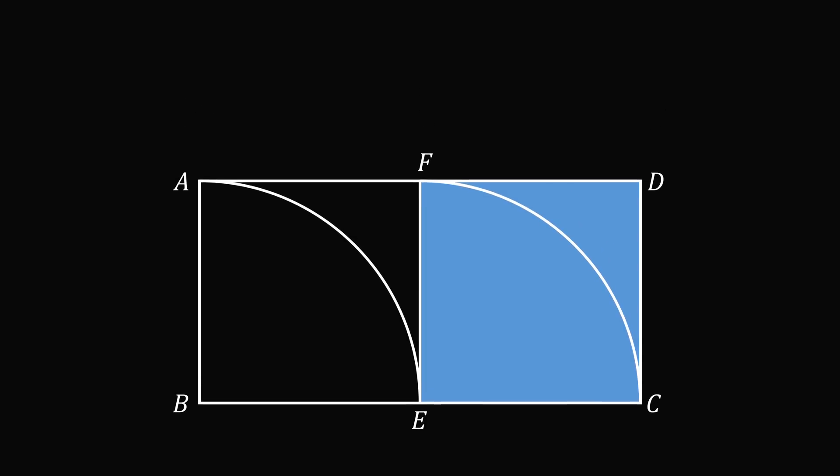So recall that AB is equal to 4, that means BE is equal to 4. Since BC was equal to 8, that means EC is equal to 8 minus 4, which is equal to 4.